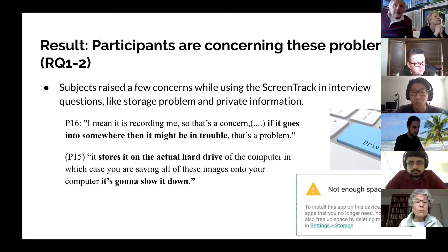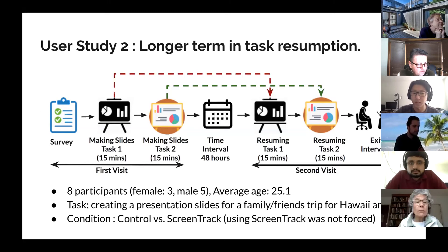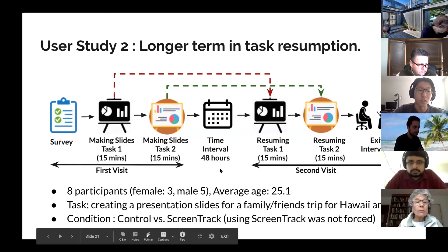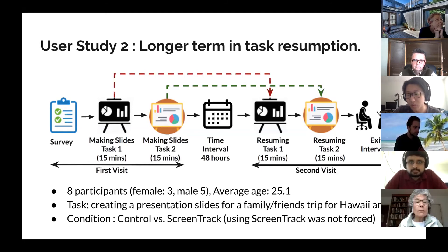Now let's move on to user study two. We recruited eight participants and asked them to make travel plans for two different places: LA and Hawaii. We still have two conditions — control and experimental — based on whether they use ScreenTrack. The key difference from user study one is that we set a time interval of at least 48 hours between two visits. This is a longer-term task resumption experiment to test whether ScreenTrack helps with task resumption.